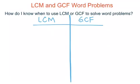This screencast is going to talk about least common multiples and greatest common factor word problems, and how you would differentiate or pick between the two when trying to solve certain word problems. The key question we're focusing on is: how do I know when to use LCM, which stands for least common multiple, or GCF, greatest common factor, to solve word problems?